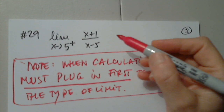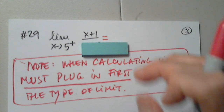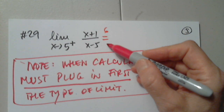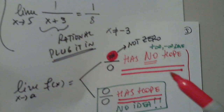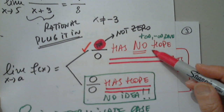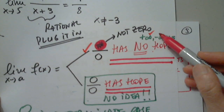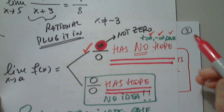Let's plug it in. Please plug in 5 and tell me where the numerator is going. The numerator gives 6. Excellent. The denominator gives 0. It's this case — a number over zero, which is a problem. I know there is no hope. The answer must be either positive infinity, negative infinity, or DNE — only one of these three. I just need to determine which one.